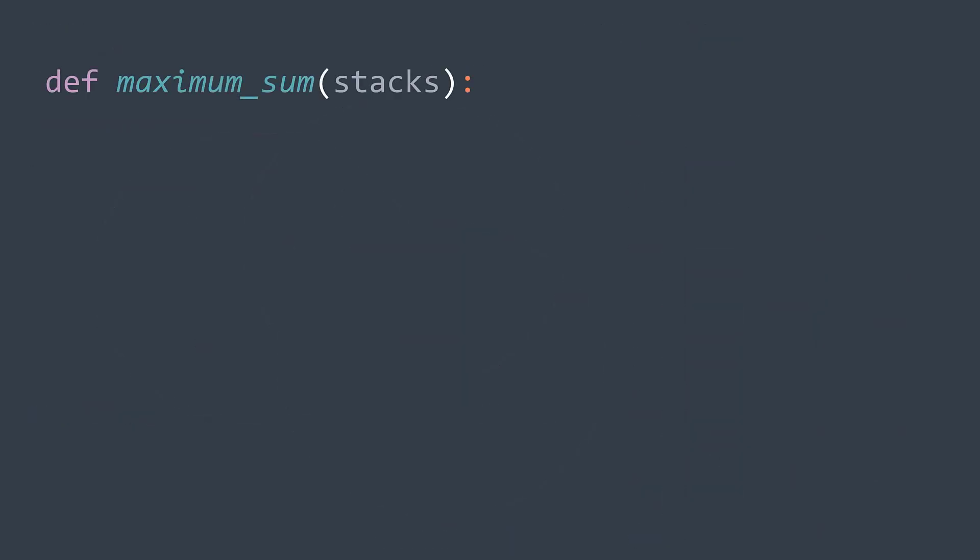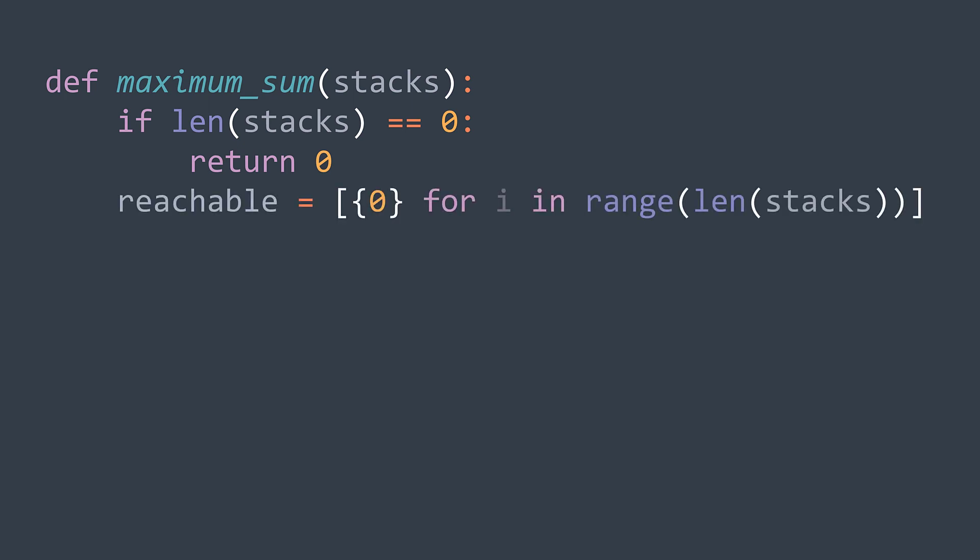In code, if we have zero stacks, then the maximum sum is zero, obviously. Else, we start by creating sets that initially contain zero, one set per stack. The set i will contain reachable sums of stack i. They initially contain zero because zero is a sum that is reachable by each stack by not taking any element.